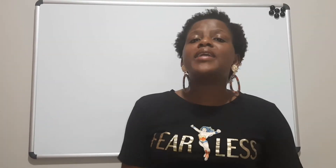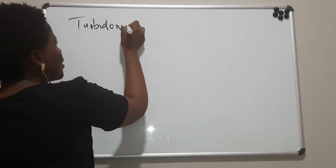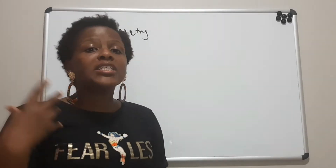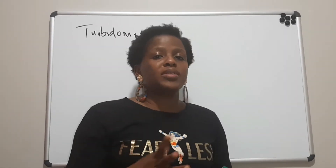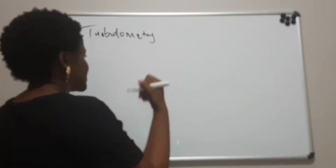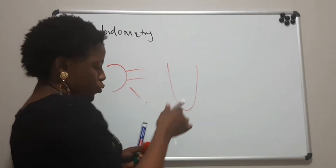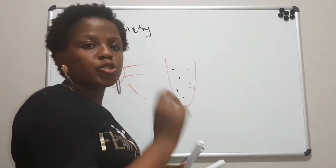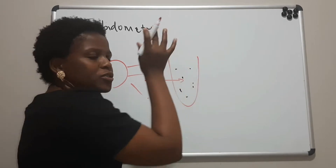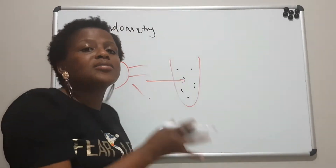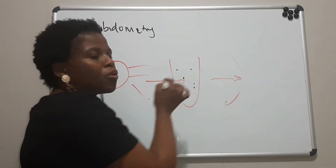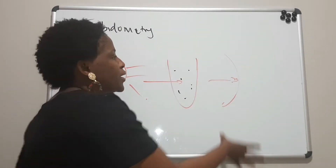In this video, I want us to talk about turbidometry and nephelometry. We will start with turbidometry. If you remember from the video we did when we were talking about spectrophotometry, turbidometry also uses the normal spectrophotometer. A beam of light is shone through a cuvette that contains particles suspended in a solution. Those particles will either absorb the light or transmit it. The transmitted light then goes into the detector, which detects the amount of light transmitted.